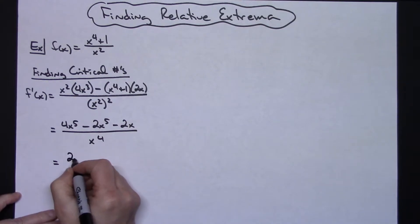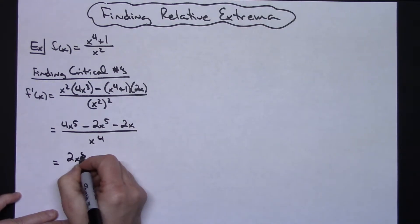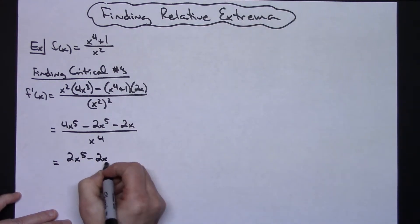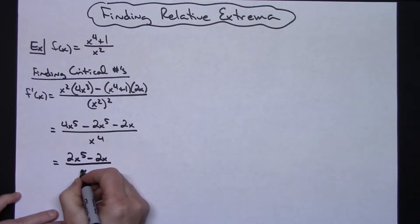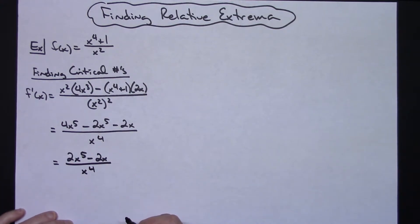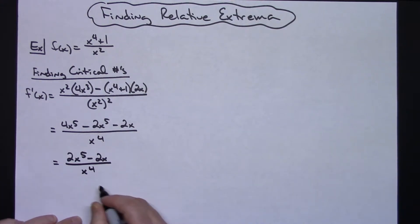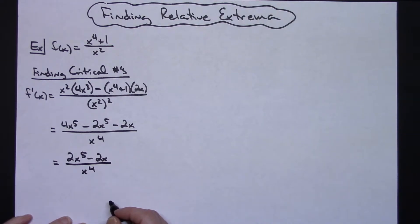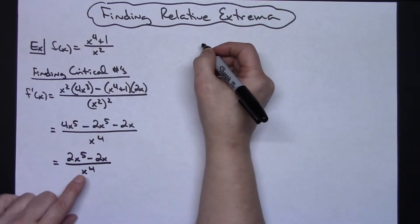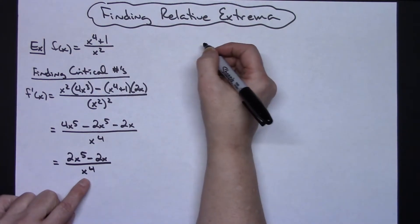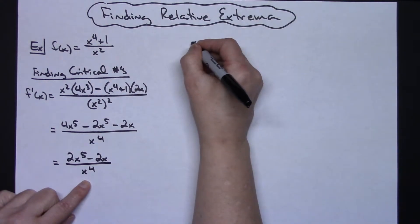All over x to the fourth. I've got some like terms there that I can combine, so I will have 2x to the fifth minus 2x, all over x to the fourth. At this point I can set both the numerator and the denominator equal to zero and find some critical points.